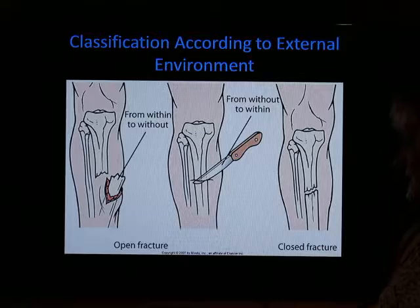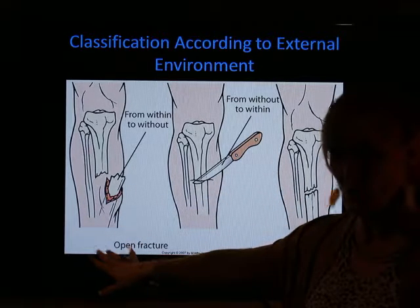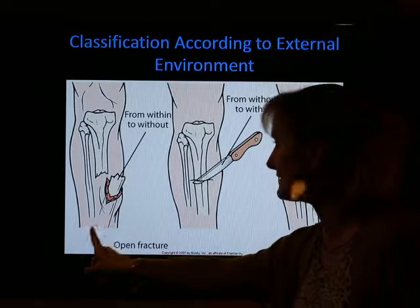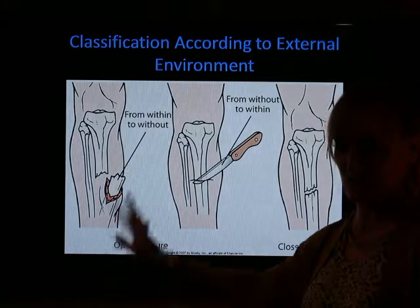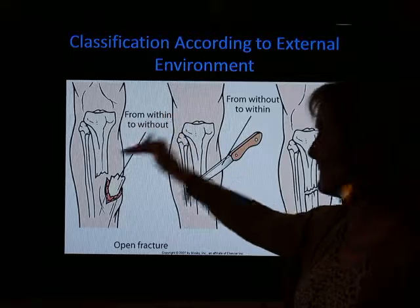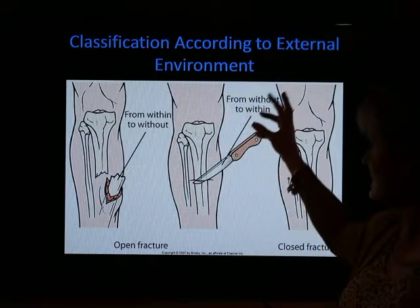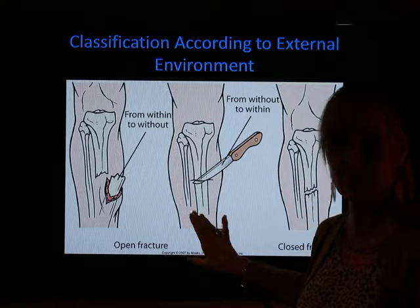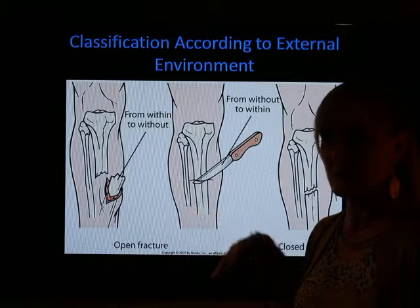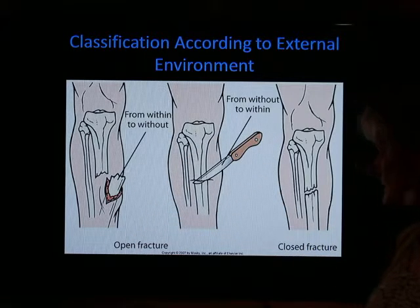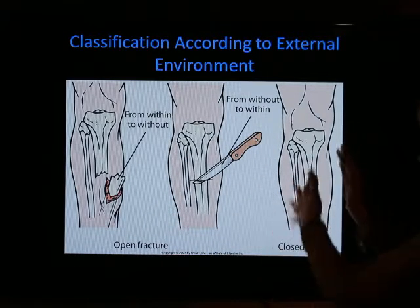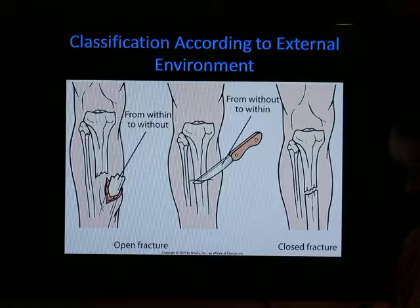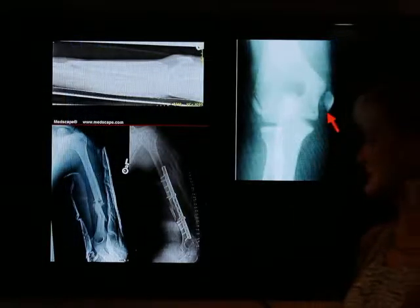An open fracture, also known as a compound fracture, is when any of those fracture types extends out through the skin — either from the bone coming out or from a trauma, projectile, or missile going in. Veteran patients who have experienced shrapnel can have this. A closed fracture is where there is no disruption in the skin; there will be bruising but no opening.